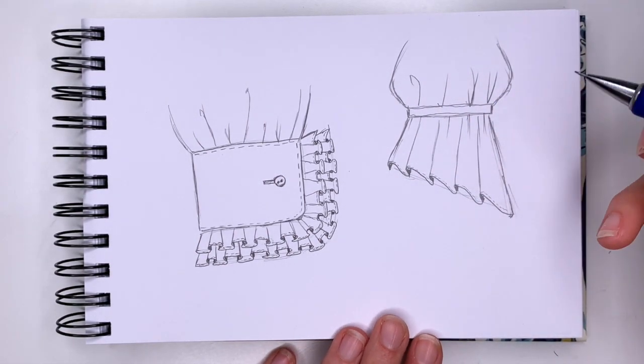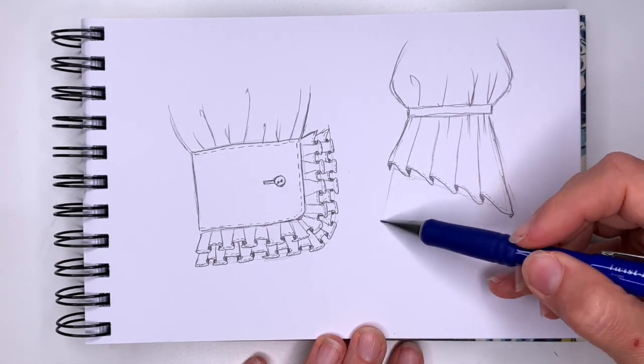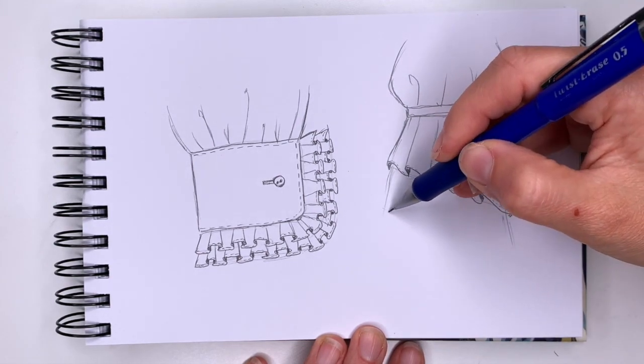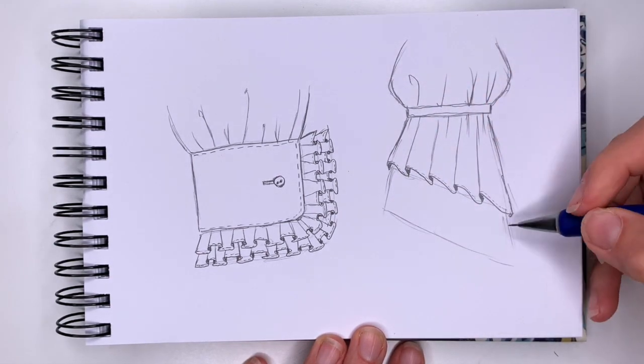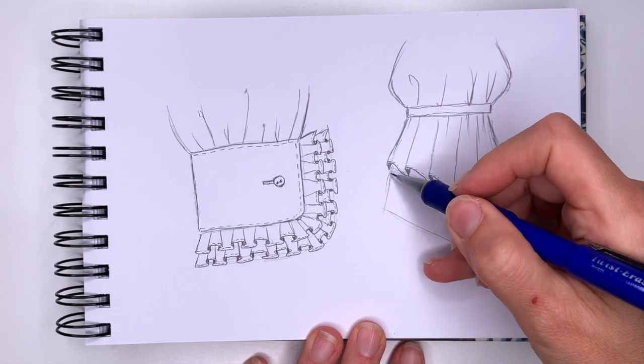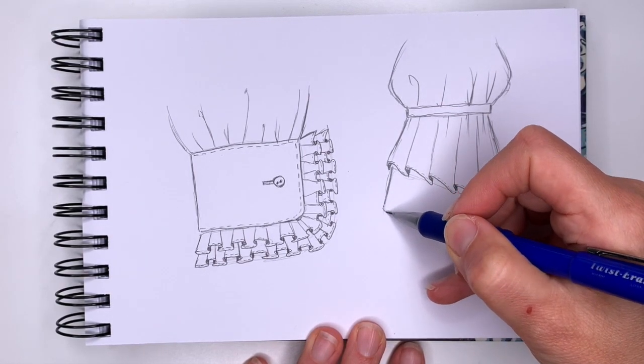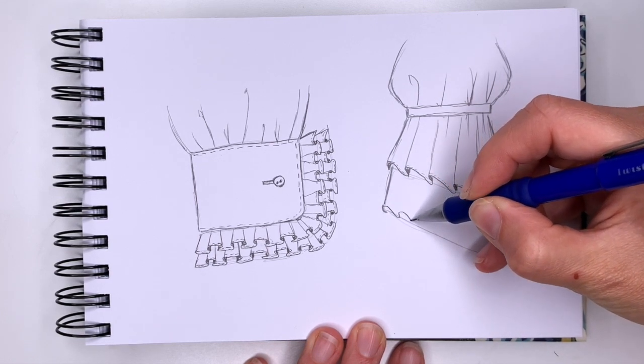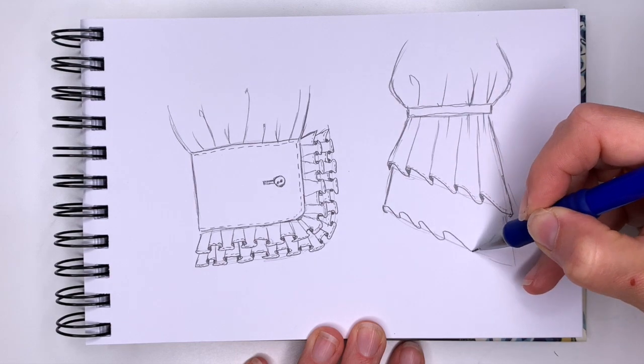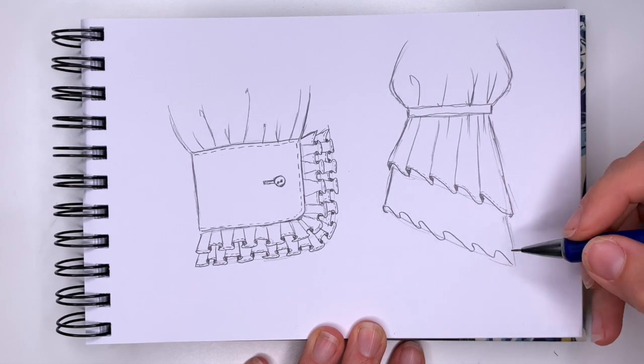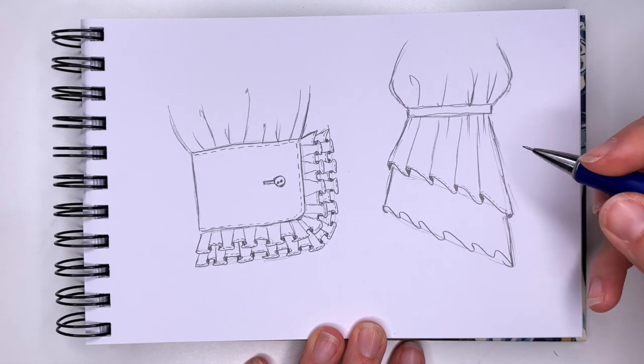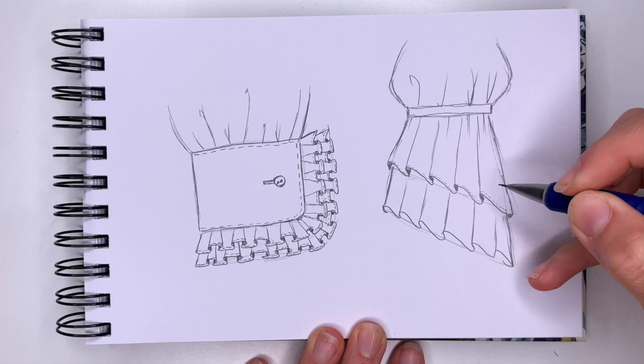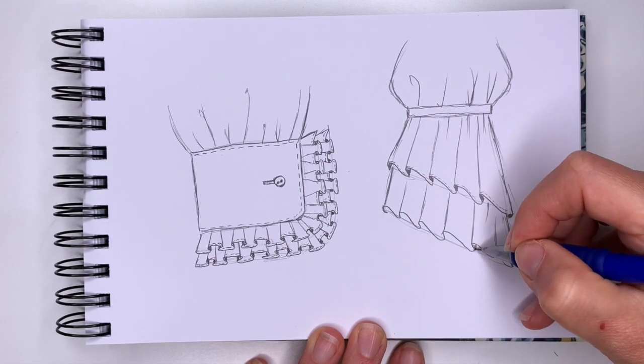And we're going to do two layers of the ruffles. So again, the second layer comes out here. And it's again in the diagonal. And same thing. Squiggly line. Going one way. Lines going towards the top. And shading in the corners.